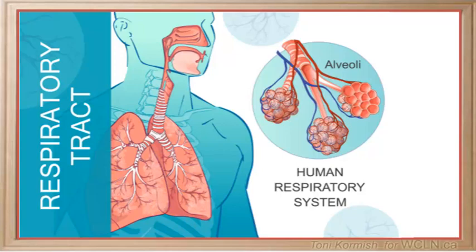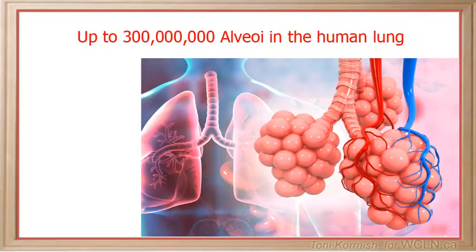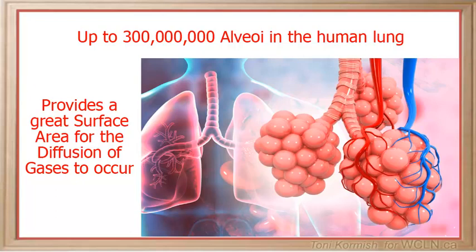As you work through this unit, be sure that you can identify the structures of the respiratory system and discuss their functions. The alveoli have a number of special characteristics. The following characteristics of the alveoli make them very efficient at gas exchange. First, they are very numerous — up to 300 million alveoli in the human lung — which provides a great surface area for the diffusion of gases to occur.